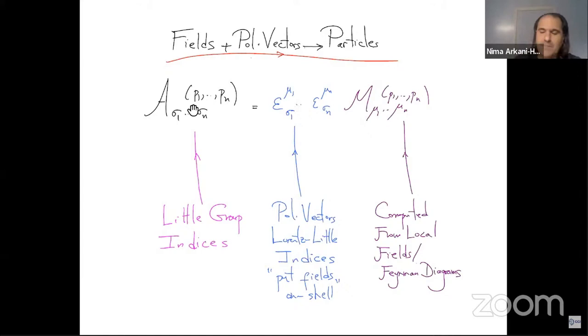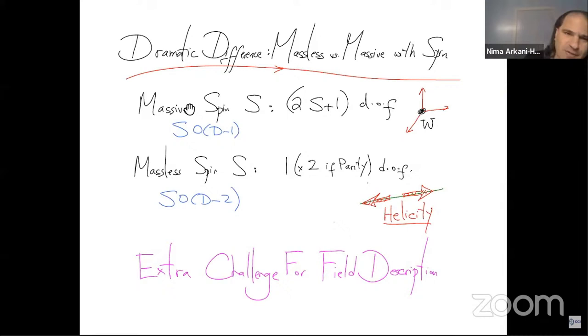And this is all well and good except for the very well-known, but also very important and dramatic difference between massless and massive particles. The degrees of freedom for masses and massive particles, the structure of the little group for masses and massive particles with spin.